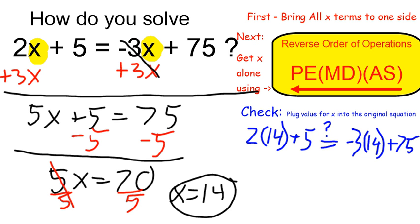I can check by putting in 14 everywhere that x appears in the original equation and see if it's in fact true. On the left, 2 times 14 is 28, so I have 28 plus 5, and on the right-hand side, negative 3 times 14 is going to be negative 42, negative 42 plus 75.